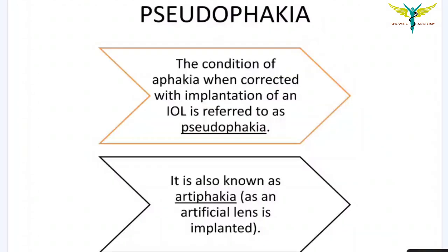Pseudophakia is a condition where aphakia is corrected with the implantation of an intraocular lens, that is an artificial lens. This condition is referred to as pseudophakia, which is also known as artiphakia, because of the implantation of an artificial lens.